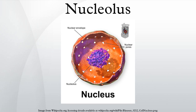Nucleoli are formed around specific genetic loci called nucleolar organizing regions (NORs), first described by Barbara McClintock. Because of this non-random organization, the nucleolus is defined as a genetically determined element. A NOR is composed of tandem repeats of rDNA, which can be found on several different chromosomes. The human genome, for example, contains more than 200 clustered copies of rDNA on five different chromosomes.